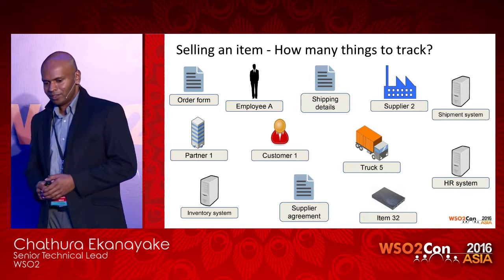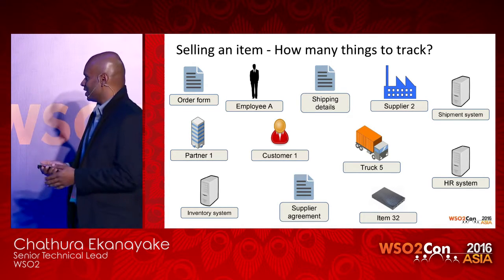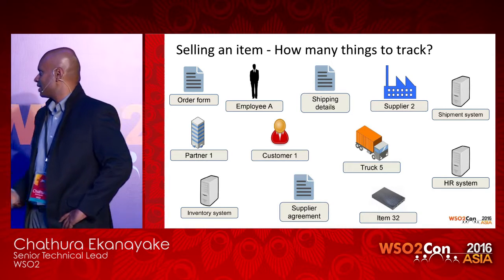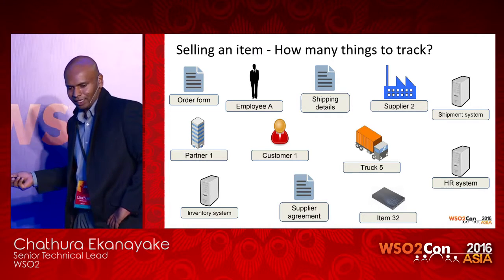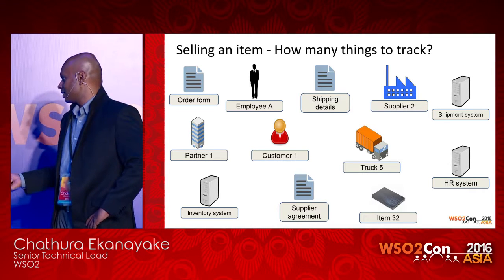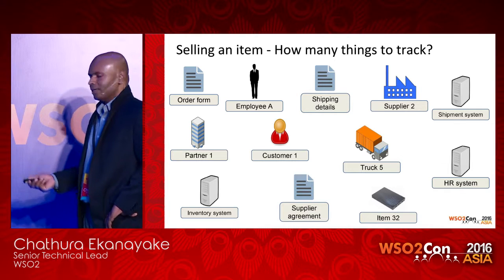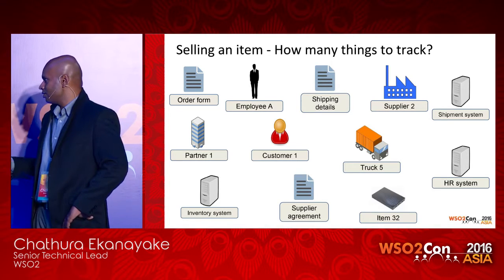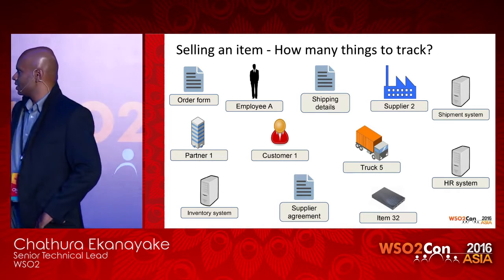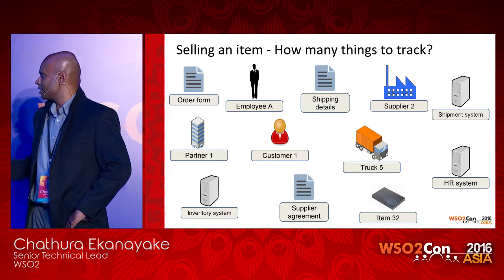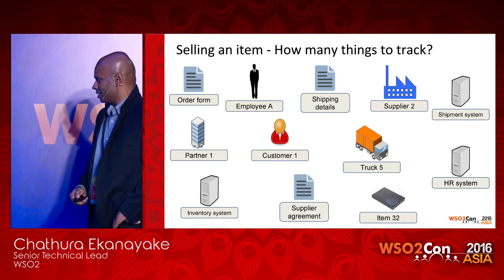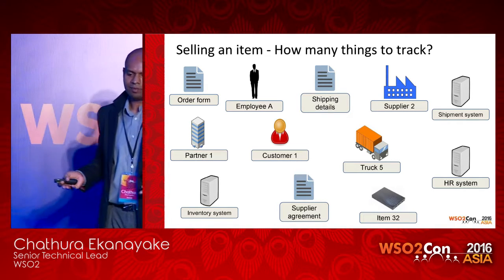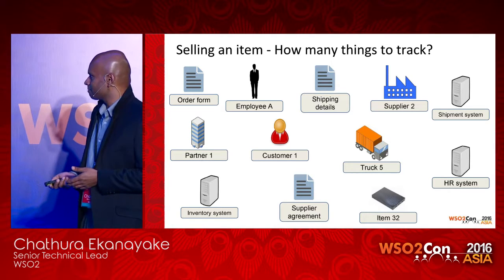If we take a closer look at a more detailed level, we have many smaller items connected for a simple business operation — again considering the operation of selling an item. There are multiple entities like shipping systems, IT systems, HR systems, inventory systems, and so on, as well as multiple users like employees and customers. There are also documents or data objects involved — for example, an order form, supply agreements with different suppliers, and a form to fill in shipping details. Connecting all these entities to perform a simple business operation is not an easy task.